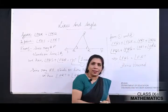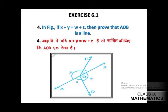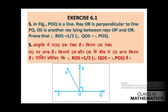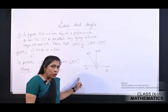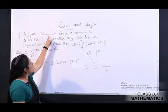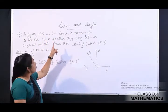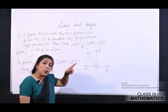Question 4 — in figure if X plus Y equals W plus Z, then prove AOB is a line — bachyo, yeh question pichli class mein already karva chuka hai. So let's move to question number 5. In the figure, POQ is a line, ray OR is perpendicular to line PQ, and OS is another ray between OP and OR. Prove that angle ROS equals half of angle QOS minus angle POS.